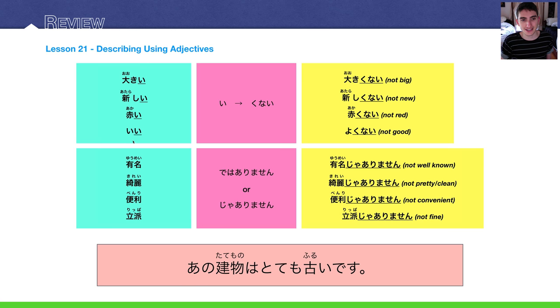And ii is an exception. This is the only exception as far as I know when it comes to adjectives in Japanese. Originally, ii was yoi. But now people just say ii. However, the conjugation patterns stayed the same from when it was yoi. So, ii becomes yokunai when it is in the negative form.